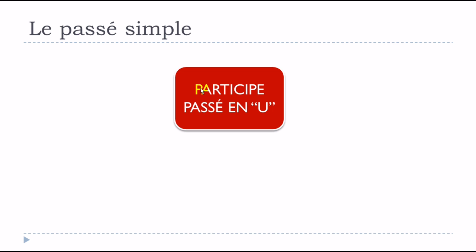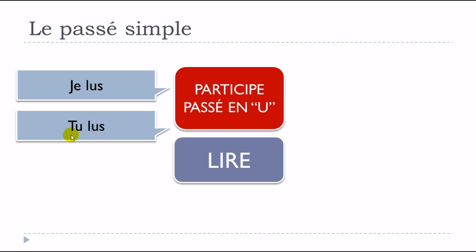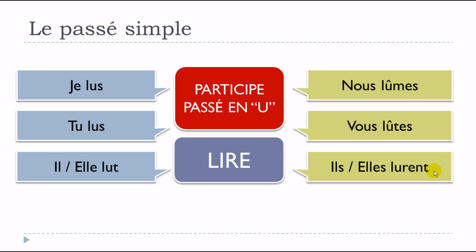Verbs with participes passés en U — example: LIRE, to read. Je lus, tu lus, il lut, elle lut, nous lûmes, vous lûtes, ils lurent, elles lurent.